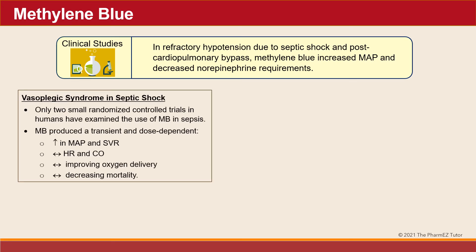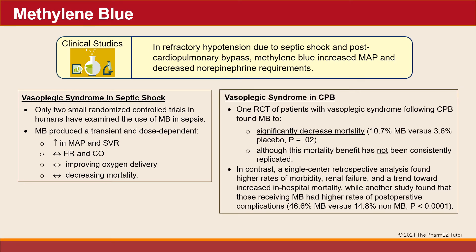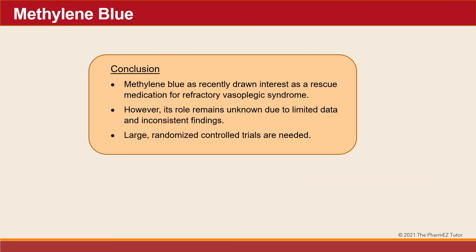In septic shock, there have only been two small randomized controlled trials. Methylene blue did increase mean arterial pressure, but it did not improve cardiac output, oxygen delivery, or mortality. In cardiopulmonary bypass, one randomized controlled trial found methylene blue to significantly decrease mortality, although this mortality benefit has not been consistently replicated. Methylene blue has recently drawn interest as a rescue medication for refractory vasoplegic syndrome; however, its role remains unknown due to limited data and inconsistent findings. Large randomized controlled trials are needed.